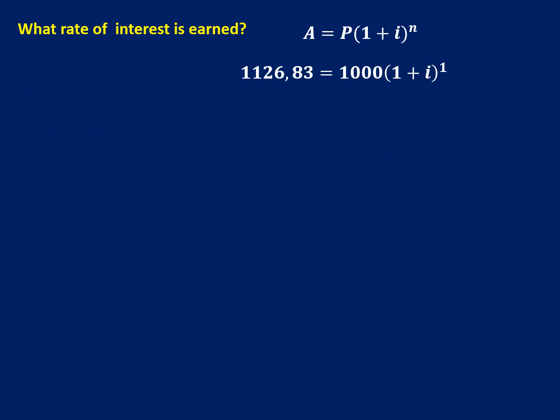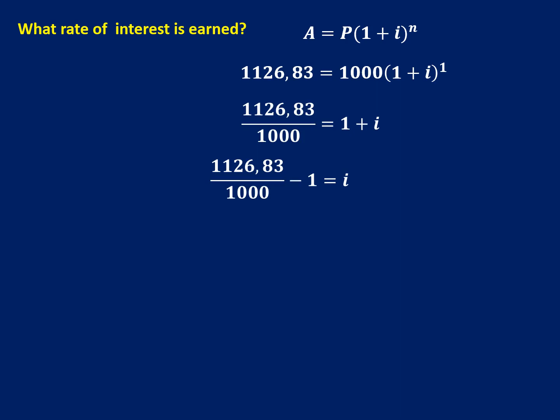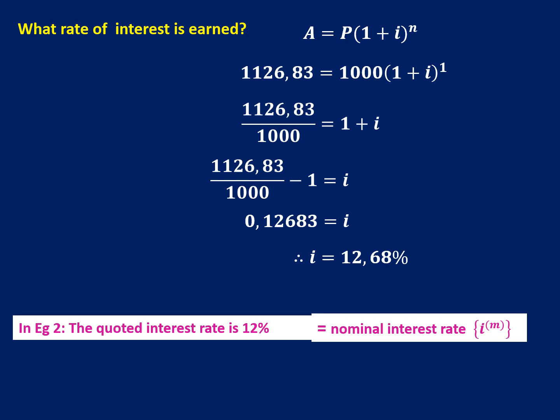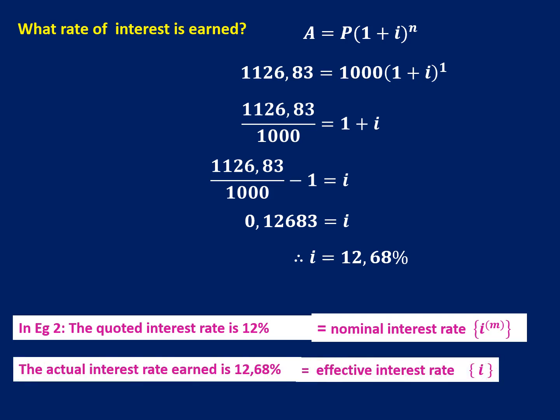We divide by 1,000 Rand on the left-hand side, and then subtract 1. The I value we get is 0.12683, and as a percentage — multiplying by 100 — we're actually earning 12.68%. The bank quoted 12%, which is known as our nominal interest rate, with the symbol I with a little M in brackets. But I'm actually earning 12.68%, which is the effective interest rate. As soon as you compound interest, you earn a little bit more than what the bank told you — what they tell you is 12%, but what you actually earn is just a little bit more.